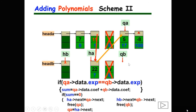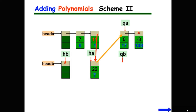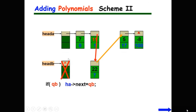The operation repeats until QA or QB reaches the tail. In this example, QB reaches the tail first. The only thing left is to free the head node of list B, and the algorithm finishes. If QA reaches the tail first instead, the remaining elements in QB should be linked at the tail of QA, and then the head node of list B is freed.